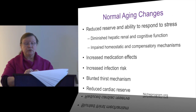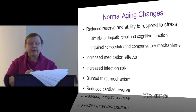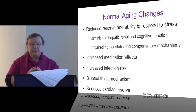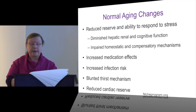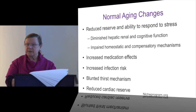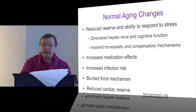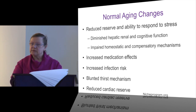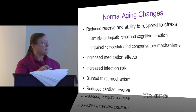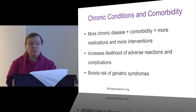The first category is normal aging changes. As we age, the ability to respond to stress is greatly decreased. Kidney and liver function and cognitive function often decline. Homeostatic and compensatory mechanisms are often impaired, and there is an increased infection risk. The elderly have a blunted thirst mechanism, so they're often not even aware they're dehydrated. Their cardiac reserve is reduced, making them much more likely to develop iatrogenic congestive heart failure.